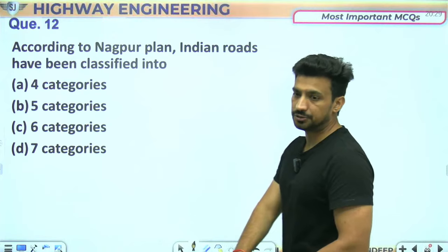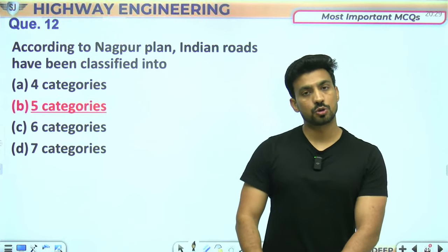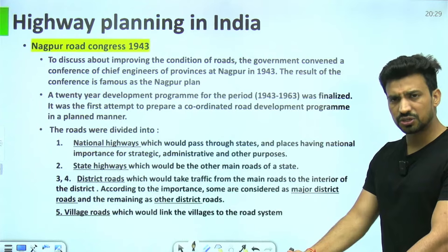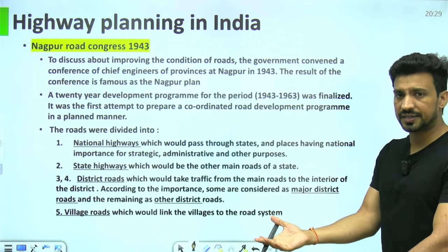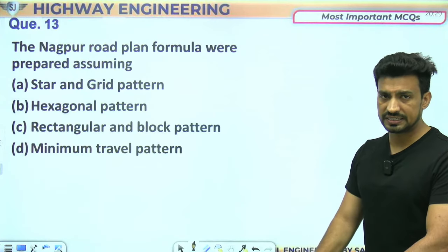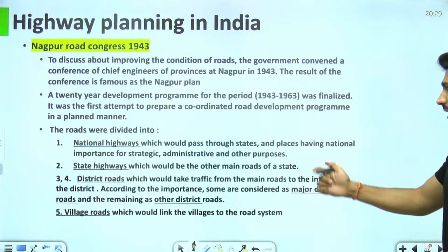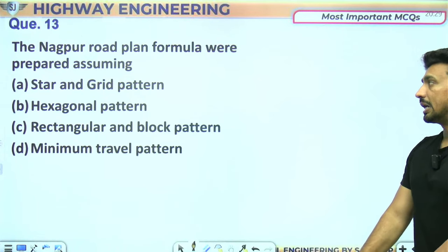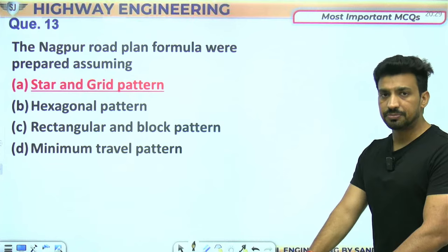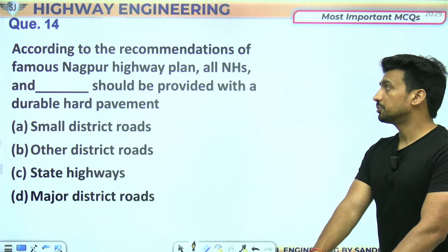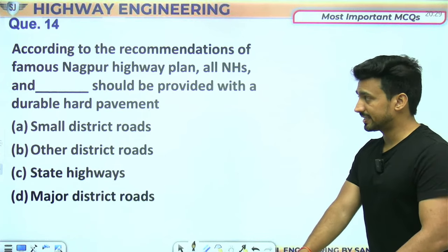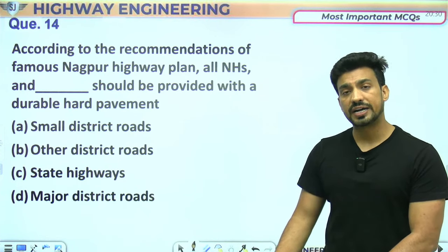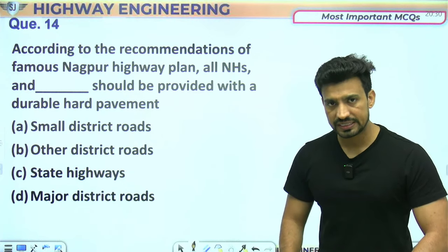According to Nagpur Plan, Indian roads को 5 categories में classify किया गया था: national highway, state highway, major district road, other district road, और village roads। Nagpur Road Plan 1943 से 1963 तक चला — यह first 20 year plan था। इसमें star and grid pattern का इस्तेमाल किया गया।